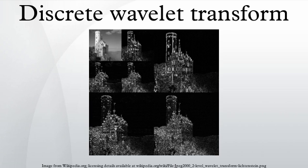The discrete wavelet transform has a huge number of applications in science, engineering, mathematics, and computer science. Most notably, it is used for signal coding to represent a discrete signal in a more redundant form, often as a preconditioning for data compression. Practical applications can also be found in signal processing of accelerations for gait analysis, in digital communications, and many others. It has been successfully implemented as an analog filter bank in biomedical signal processing for design of low-power pacemakers and also in ultra-wideband wireless communications.